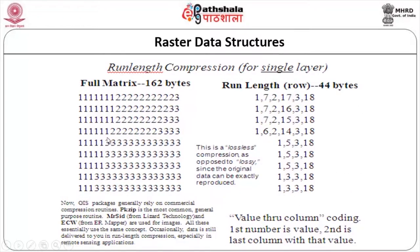For a single layer, if you use the full matrix without compression, you get 162 bytes of data. When using run length encoding, it is only 45 bytes — almost one-fourth. You should remember this is a lossless compression, as opposed to lossy compression, since the original data can be exactly reproduced in this case.